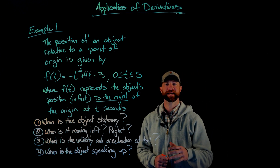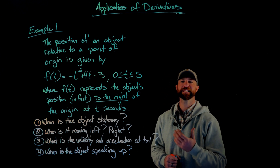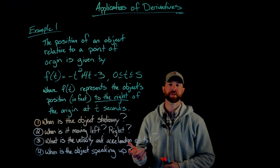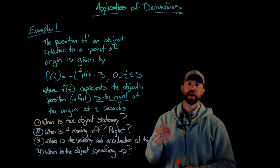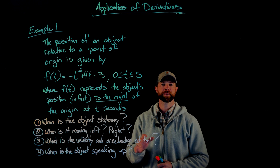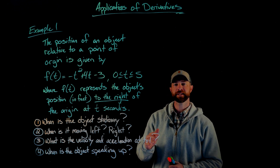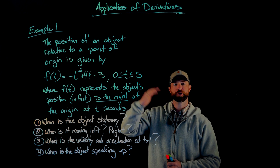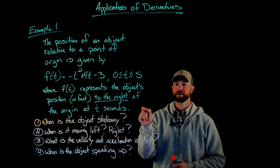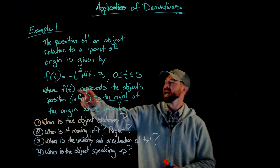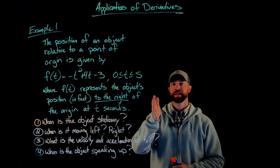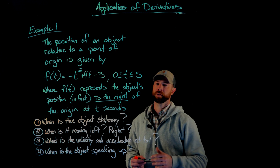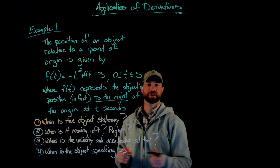In this video, we're going to continue the investigation of applying different derivatives to application problems. In this case, we're given this position function. This is a little bit different than the previous position functions we've seen. The previous examples have been position in terms of time and the vertical height of an object. This is a little bit different — a couple of different values here.